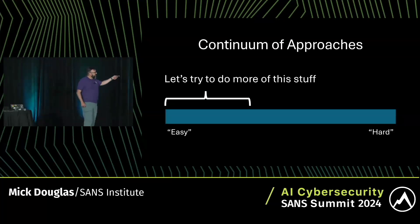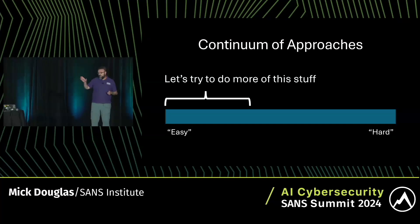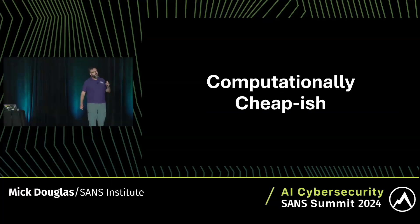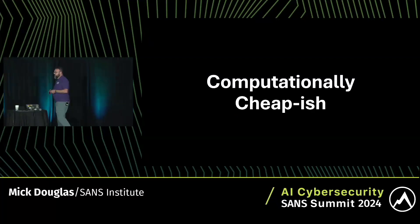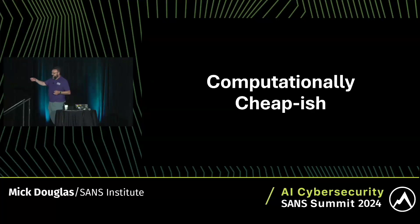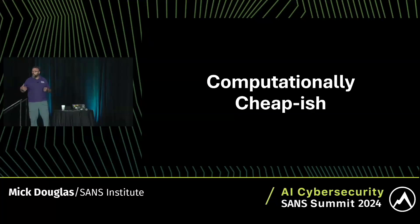What I'm advocating is to do more of the easier statistical stuff. Markov chains may fit in here if you use them in the right appropriate cases. They're computationally cheap-ish — a little more expensive than calculating the median or finding standard deviations, but a hell of a lot cheaper than doing things like neural nets or genetic algorithms.